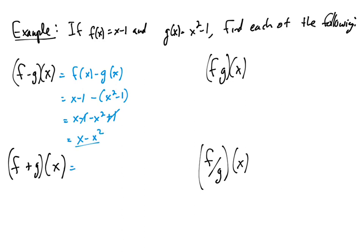Okay, f plus g of x, similar to what we just saw. Let me write out the intermediate step here. This just means f of x plus g of x. So we're going to say x minus 1 plus x squared minus 1. So we end up with x squared plus x minus 2.